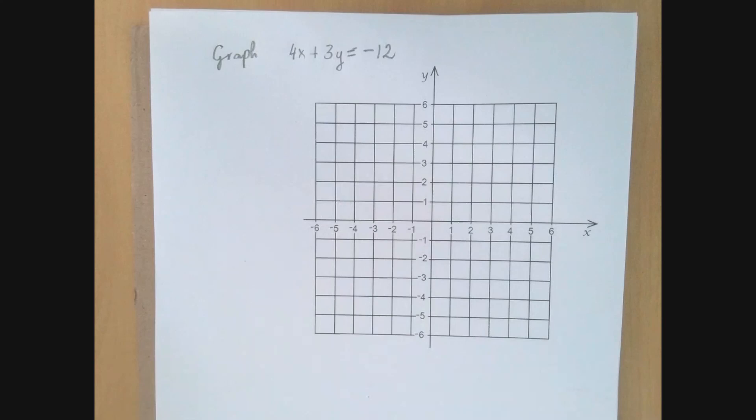The problem is to graph the equation 4x plus 3y equals negative 12. For every value of x, there is a value of y, so there are many solutions for the pair of numbers x, y.